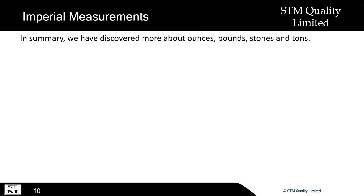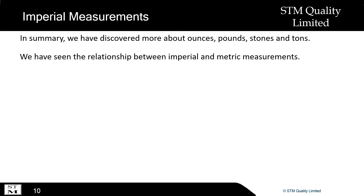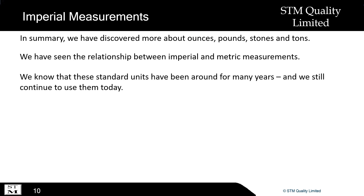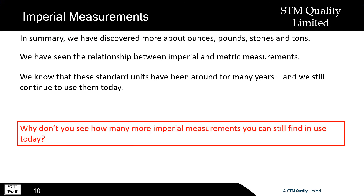In summary, we have discovered more about ounces, pounds, stones and tons. We have seen the relationship between imperial and metric measurements. We know that these standard units have been around for many years and we still continue to use them today. Why don't you see how many more imperial measurements you can still find in use today? Bye!